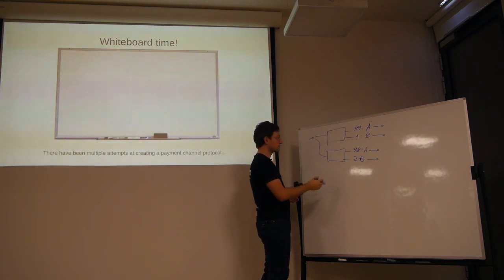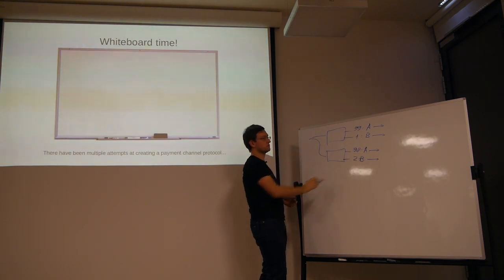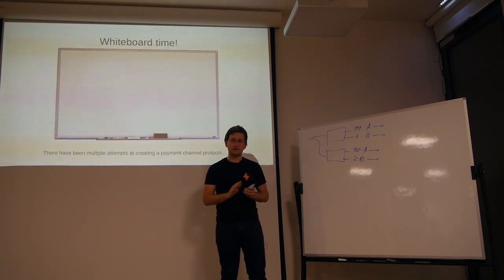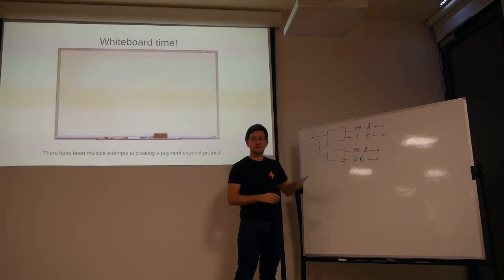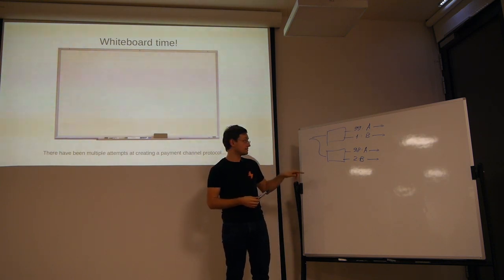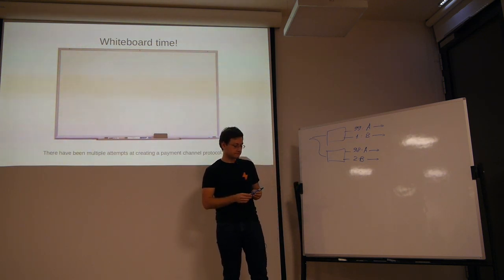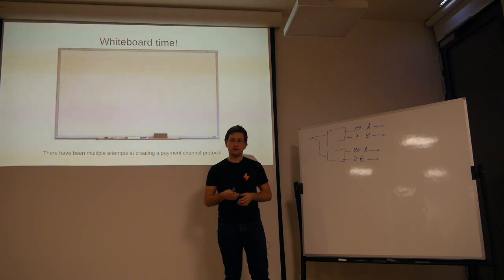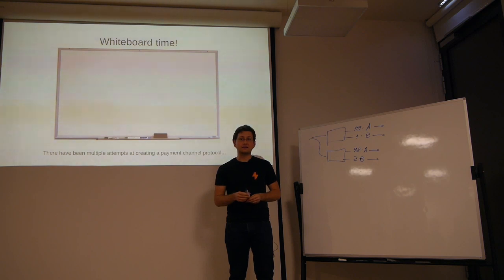Alice continues to sign new transactions which give fewer coins to herself and more coins to Bob. At some point, Alice says okay, that's enough, we want to stop this relationship. Then the last transaction is broadcast onto the blockchain. The reason why it's the last transaction is because all these transactions are stored at Bob's computer and Bob can decide whether to broadcast them or not. And the last transaction gives him the most money.